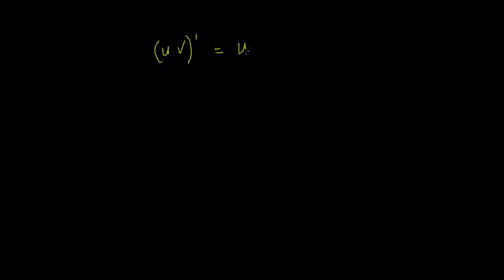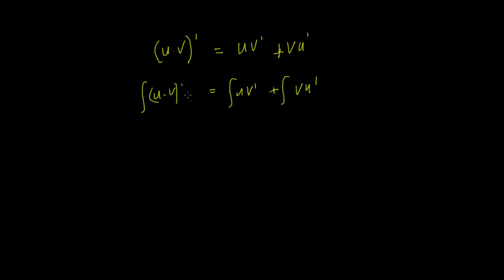So if you have two functions u times v and we're looking to find a derivative, the product rule says it's going to be u times v-derivative plus v times u-derivative. If we integrate both sides, we have u·v equals the integral of u·v-derivative plus the integral of v·u-derivative, because the integral of a differential gives us u times v.